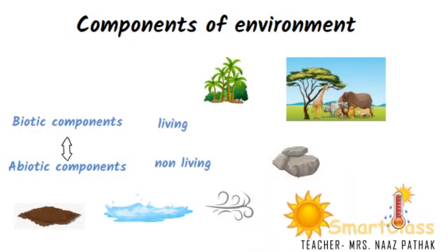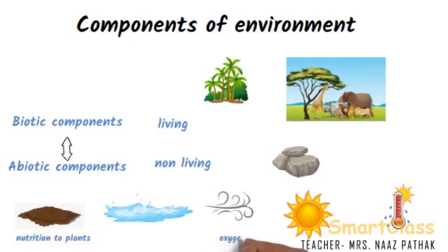Soil, rock, air, water, light, etc. are all abiotic components of the habitat. The abiotic factors are necessary for the existence of the plants and animals. For example, soil provides nutrition to plants, air provides oxygen to living things for respiration, sunlight helps in photosynthesis, and temperature or heat is required for germination of seeds to grow into a new plant.